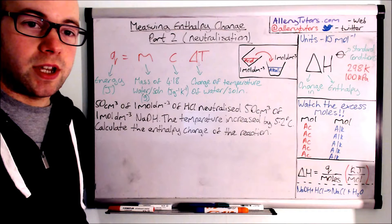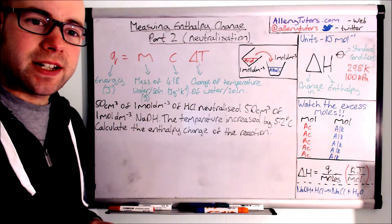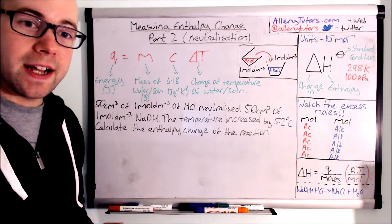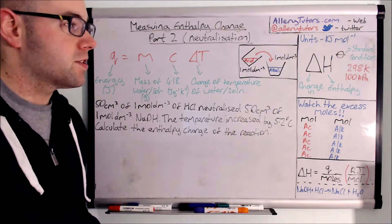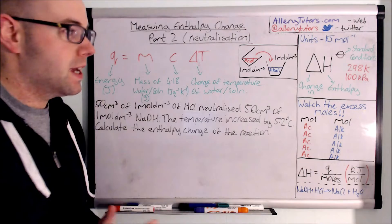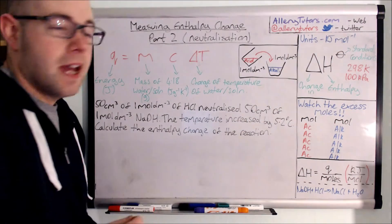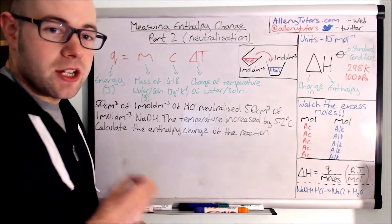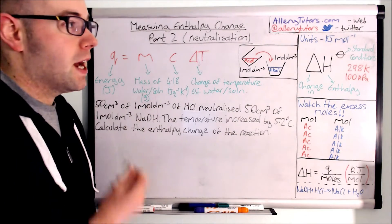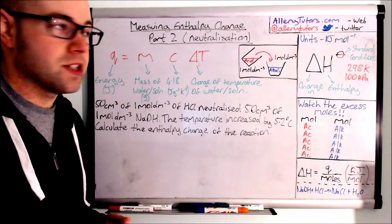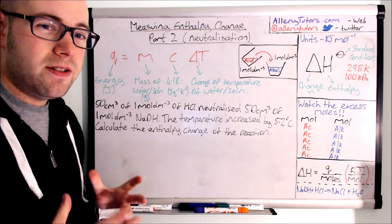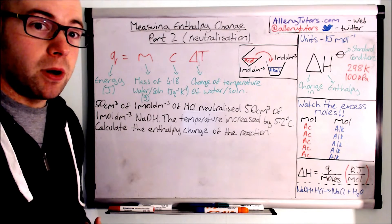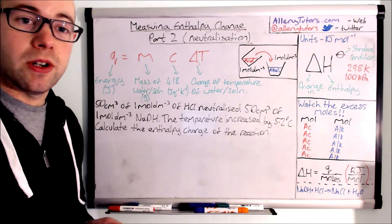I'm going to assume that you know how to use the equation at least. Neutralization is a reaction where we take an acid and an alkali and form a neutral salt — these reactions are generally exothermic, so they give out heat energy. We're going to look at what the delta H with the standard conditions symbol means: delta means change, H stands for enthalpy, and the standard symbol stands for standard conditions — 298 Kelvin and 100 kilopascals. We can use enthalpy to work out how much energy is given out per mole of substance, comparing under standard conditions.